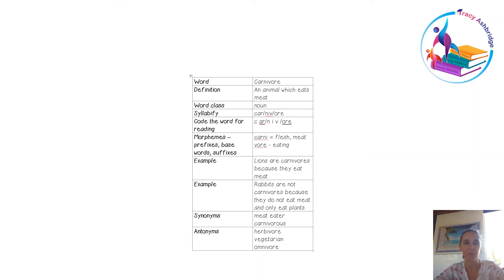Then I code the word. I've put the A and the R together because they're saying the sound 'ar,' and I've put the O, R, and E together because they're making the sound 'or' together on the end: car-ni-vore. Then I like to look at the morphemes in the word—the prefixes, the base words, the suffixes—what do those bits mean? We've got 'carni,' which means flesh or meat, and 'vore' means eating. So if we put those together, we're obviously going to get something that eats meat.